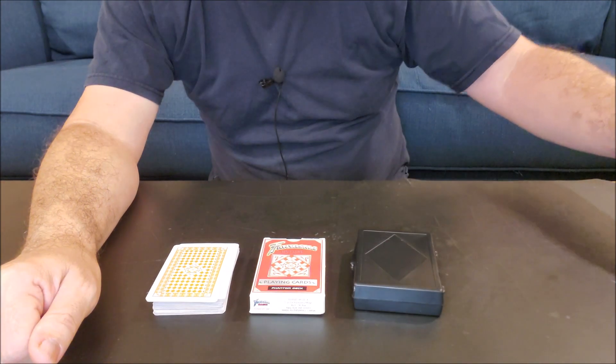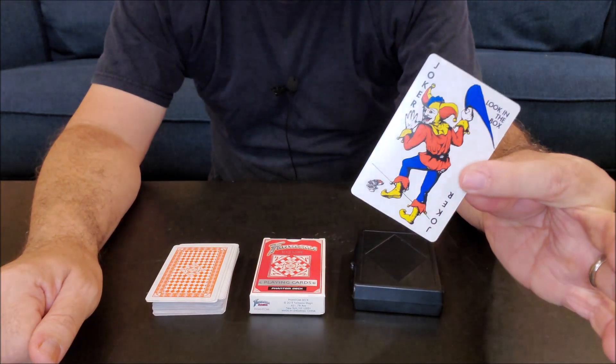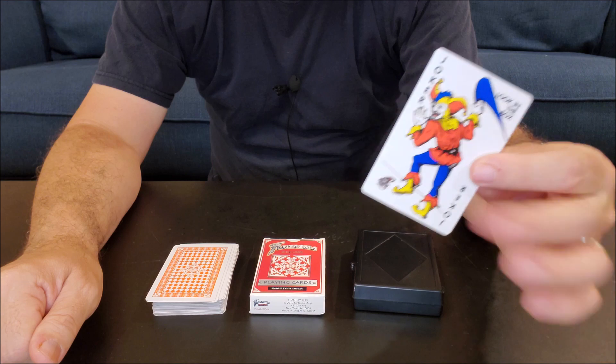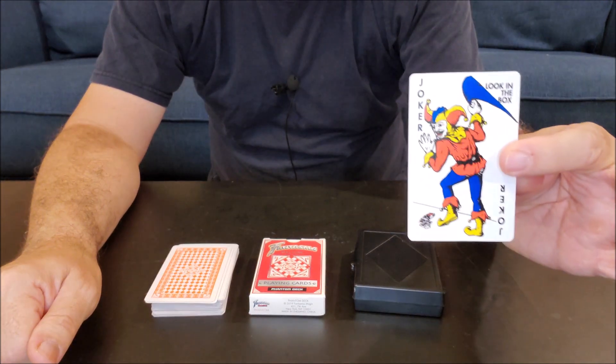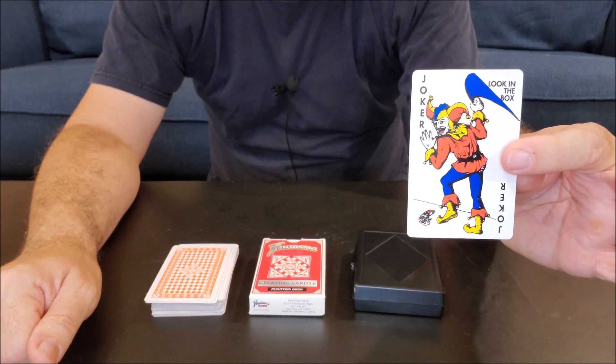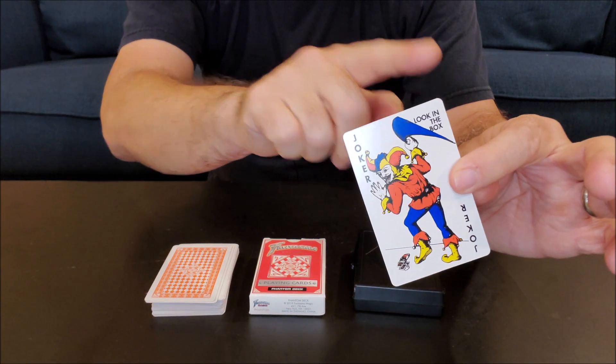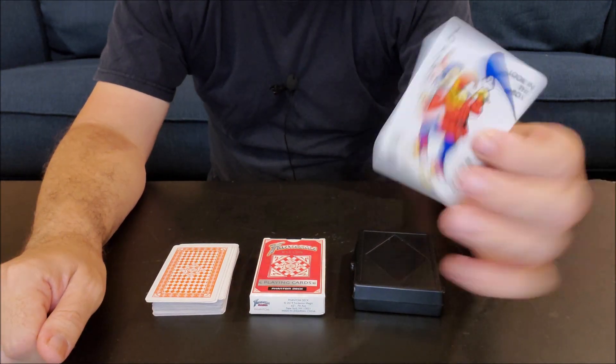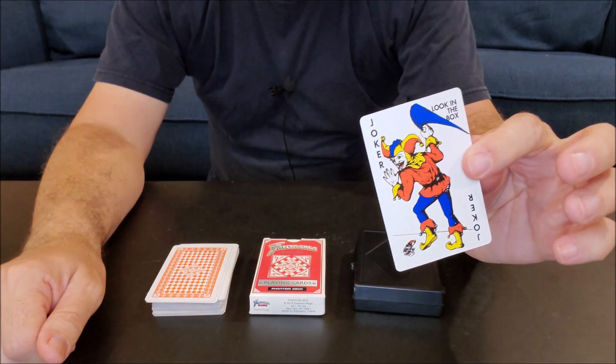The other thing you'll need is the Joker card that we took out of the deck when we did the setup. Now you're going to look at this Joker card and you're going to see something very interesting about it and that's up here in the corner. It says look in the box.